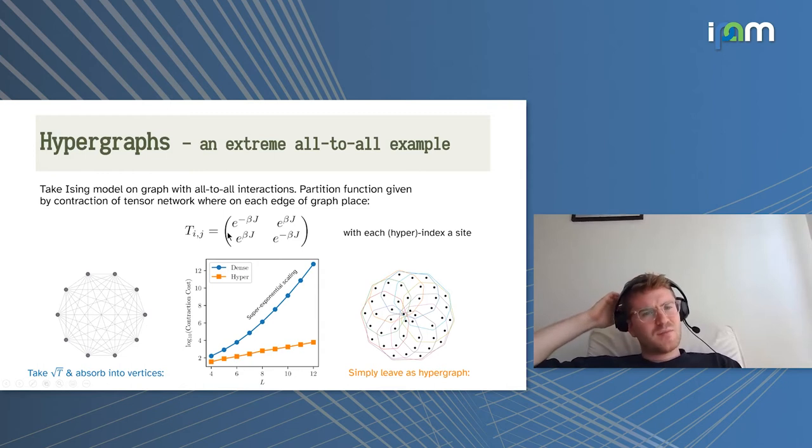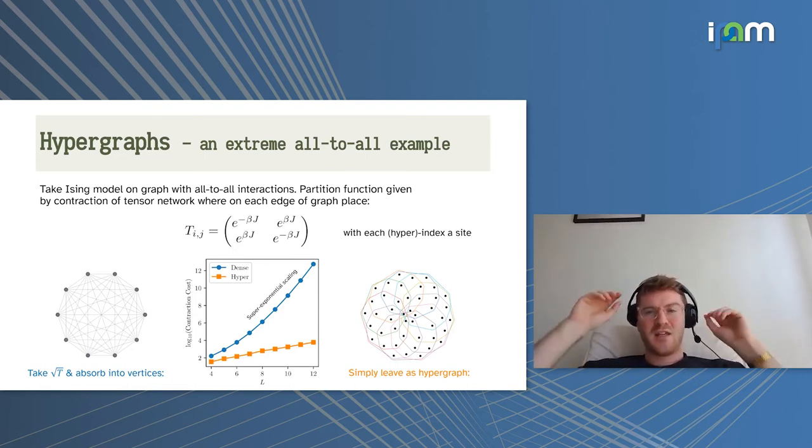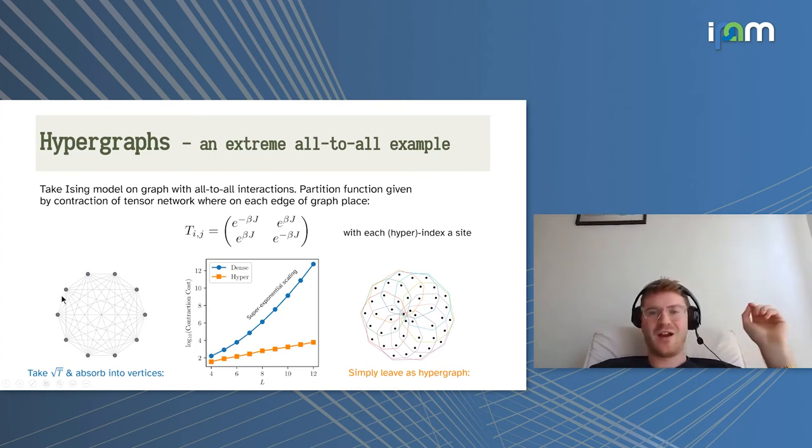Just to give a more concrete example, one tensor network you might want to compute is the partition function of the Ising model, classical Ising model. If you consider this model with all-to-all interactions, the way you would usually compute this is to take the tensor encoding the interaction probabilities, which lives on the edges of the original graph, and split this in two to absorb them into the nodes of the normal tensor network. But these tensors grow very, very large very quickly. Whereas if you just leave these as hyperindices, you get some graph like this with very small tensors. You find super exponential scaling for this case, and much better scaling for the hypergraph case. So there's a real practical advantage to using hyperindices in certain settings.